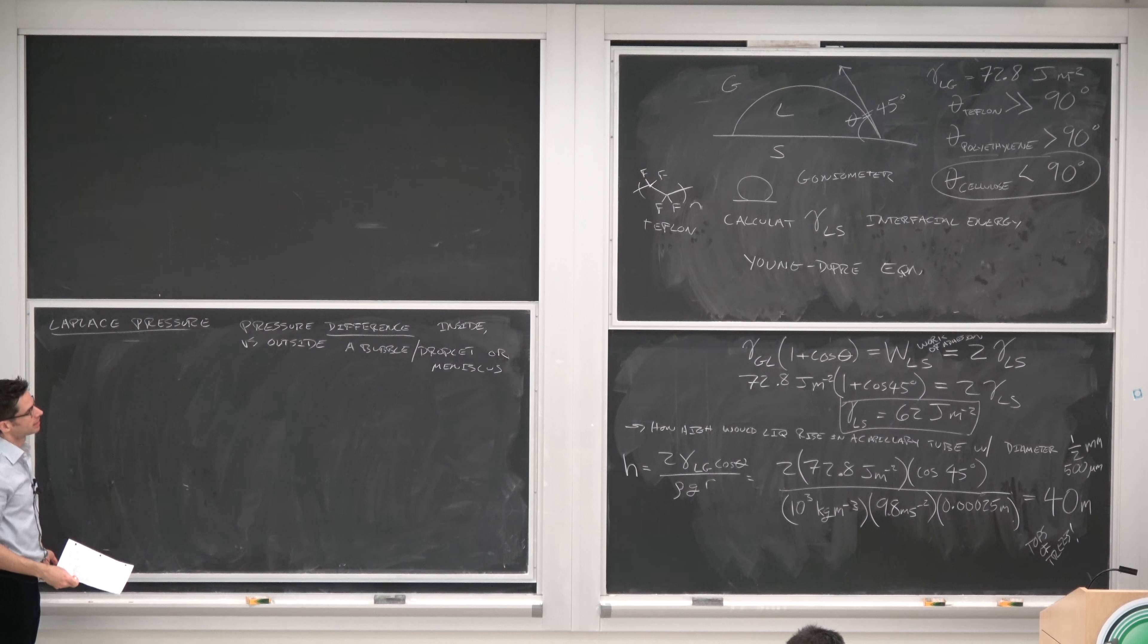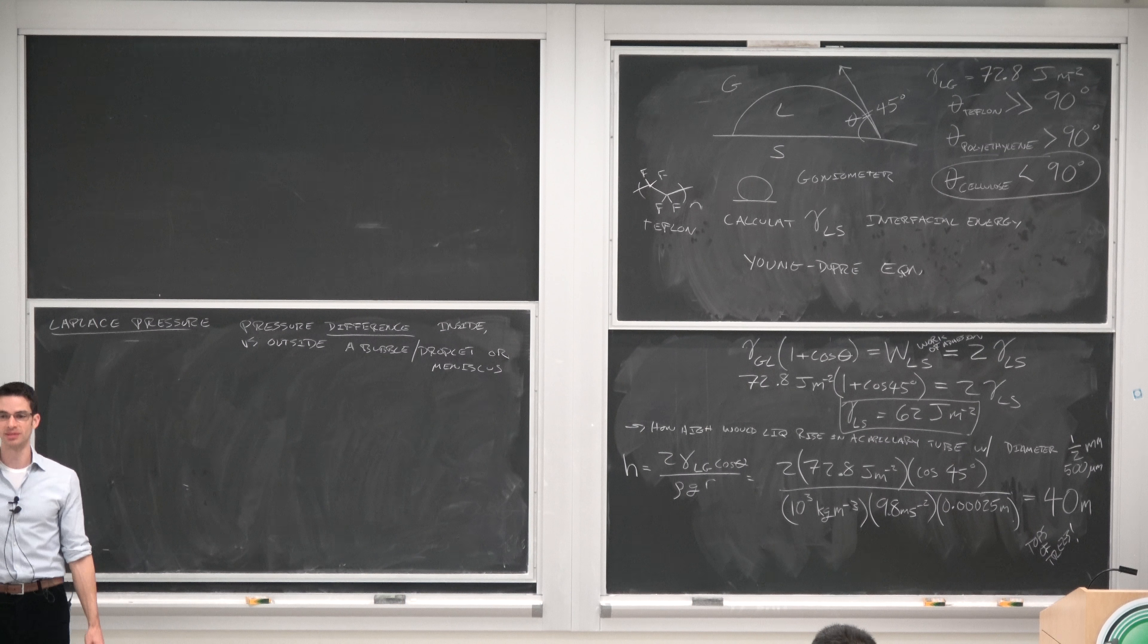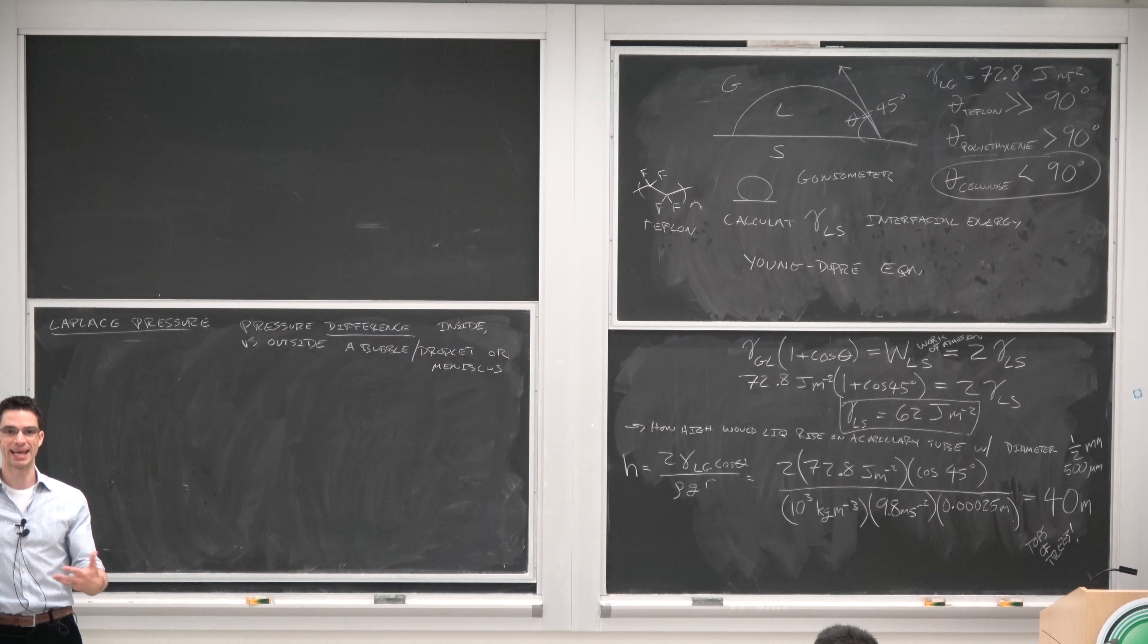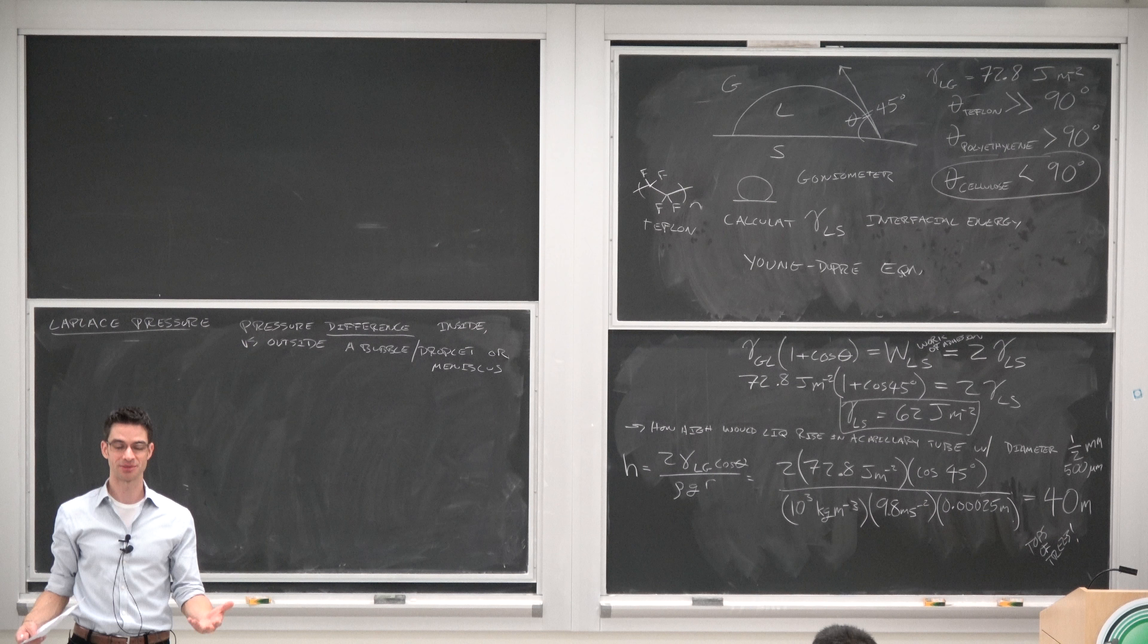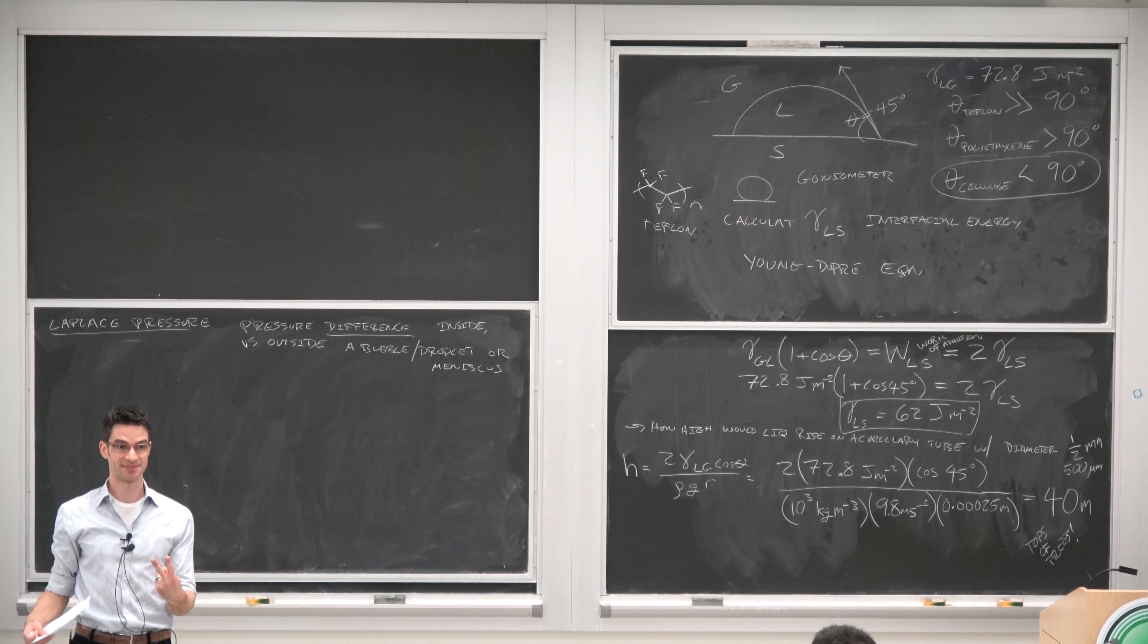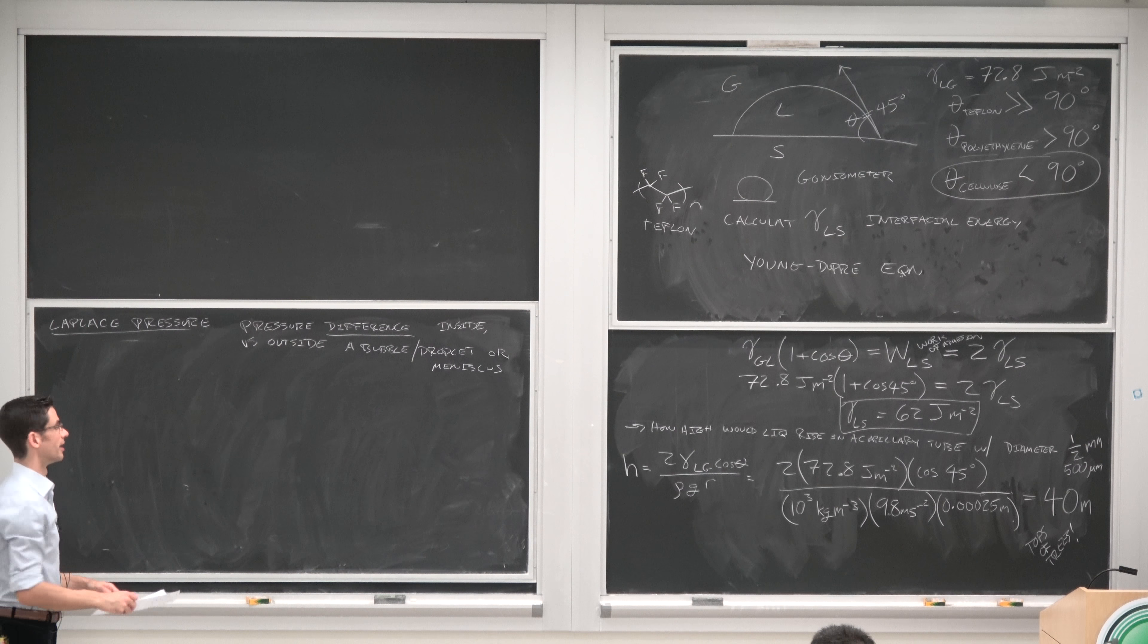So a bubble, what's the difference between a bubble and a droplet? A bubble usually refers to some gas phase and some condensed phase, whereas a droplet is two condensed phases, one of which is immiscible in the other.